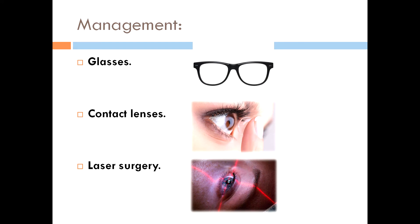What about the management? There are three most common management options: glasses, contact lenses, and laser surgery. Glasses are easy to put on and take off and are very helpful for people with vision changes. Contact lenses are placed inside the eye to correct the refractive error. However, for laser surgery, keep in mind that this option isn't always available for people with degenerative myopia, as you need a stable prescription to take advantage of this procedure — so it is not recommended for all patients.